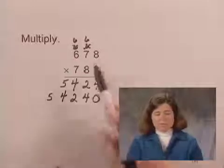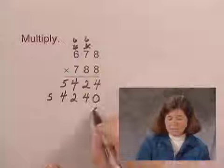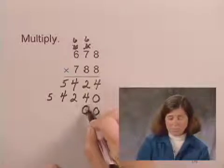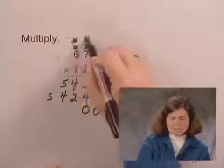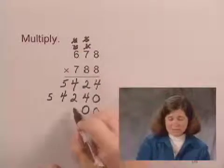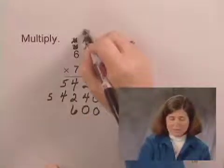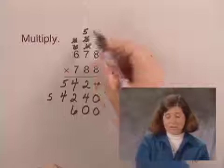Now we multiply 678 by 700. Since it's seven hundreds, I'll write two zeros, and then multiply by 7. And cross off these sixes to make sure they're out of the way. 7 times 8 is 56. 7 times 7 is 49, plus 5 is 54.